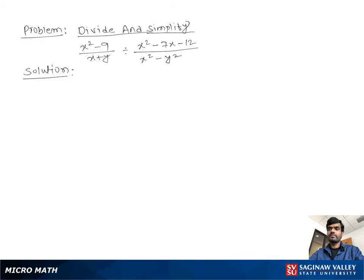Divide and simplify (x² - 9)/(x + y) divided by (x² - 7x - 12)/(x² - y²). We keep the first fraction as it is: (x² - 9)/(x + y). Then we change the divide sign into a multiply sign and reciprocate the second fraction.